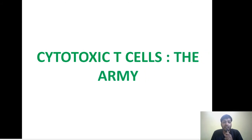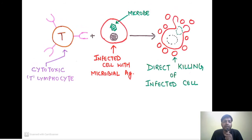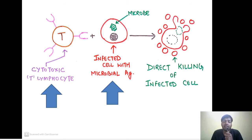Cytotoxic T cells are like the army — they follow orders and once they encounter a threat, they kill directly. They act not directly on microbes, but on cells which are infected with microbial antigen. When an infected cell is destroyed, the microbes inside are also destroyed in the process.